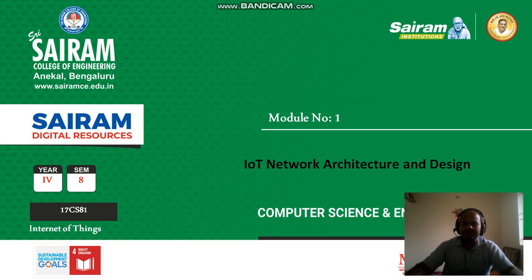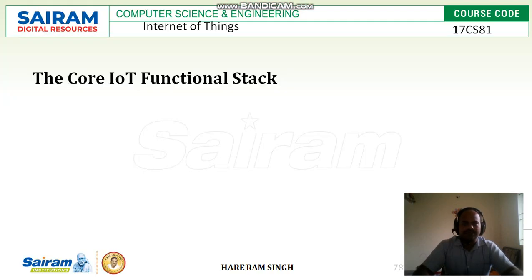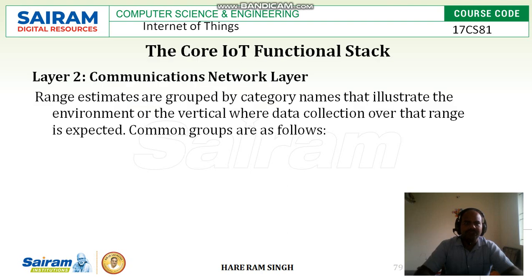Dear students, let us continue module 1. This is lecture video 9. In this one, we will continue with the four IoT functional aspects of the simplified IoT architecture. We will be discussing about layer 2, which is the communication network layer.